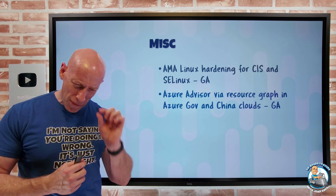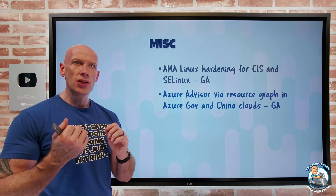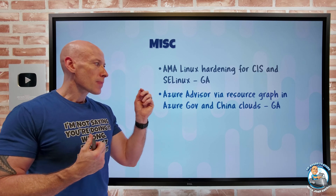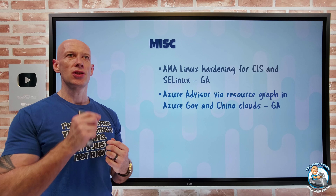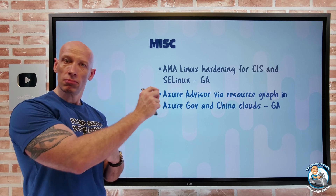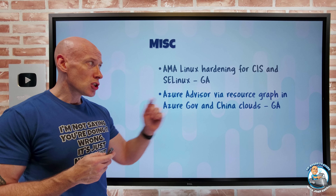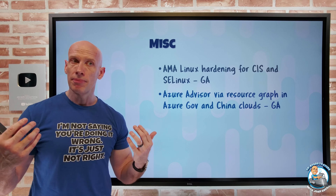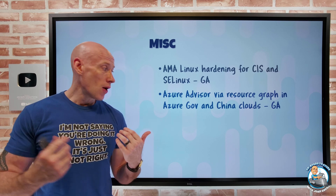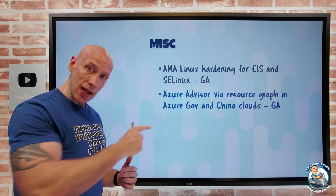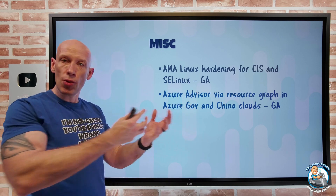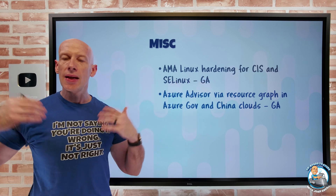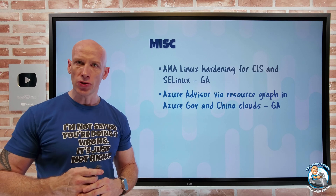Azure Advisor is all about recommendations for resiliency, performance, cost, security, and operational excellence. If you have lots of subscriptions, it can be challenging to look at every subscription's advisor recommendations. One nice approach is to use Resource Graph — at large scale you can gather all those recommendations and act on them. This has been available in the commercial cloud for a long time, and now in Azure Gov and China clouds you can do the same thing: gather Azure Advisor recommendations across all your subscriptions programmatically using Graph.